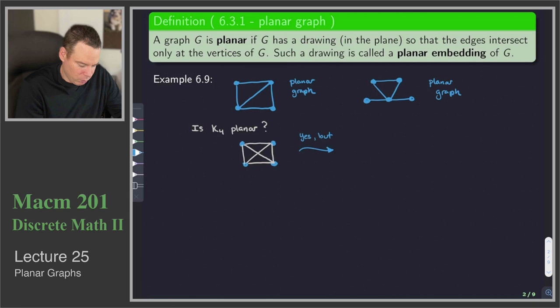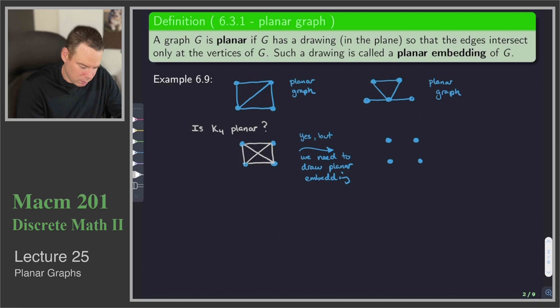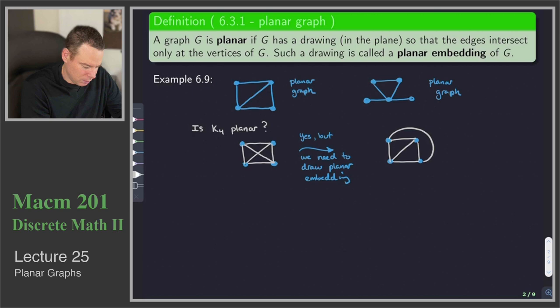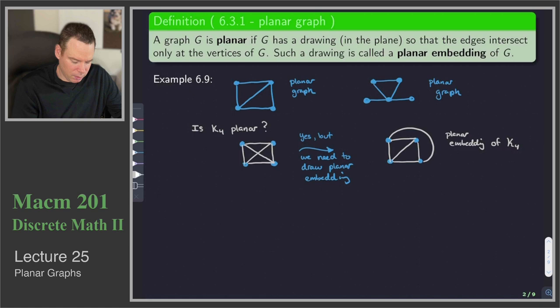We need to draw a planar embedding. We just have to draw the graph so that the edges don't intersect except at a vertex. We've got the graph from the top left corner that we knew was planar. Now I still need to connect the vertex in the top left with the vertex in the bottom right, and I can do that by just letting that edge go around the outside. So there's a planar embedding of K4 — yes, it is planar, and we can draw it so that it's a planar embedding.